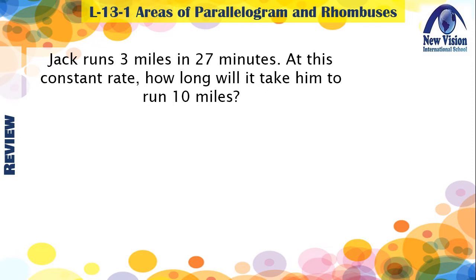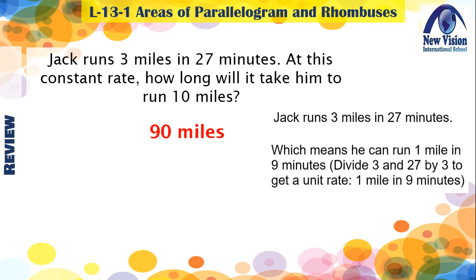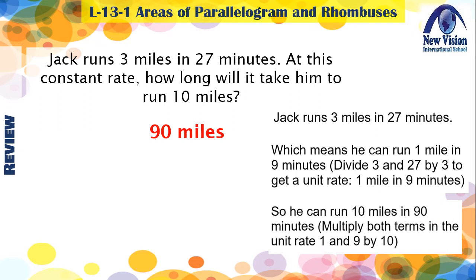The answer is 90 minutes. Let us solve this problem. Jack runs 3 miles in 27 minutes, which means he can run 1 mile in 9 minutes. Divide 3 and 27 by 3 to get the unit rate: 1 mile in 9 minutes. Then multiply both terms by 10, so he can run 10 miles in 90 minutes.